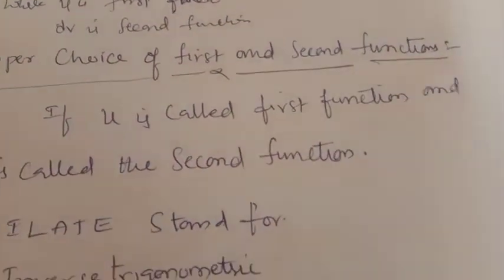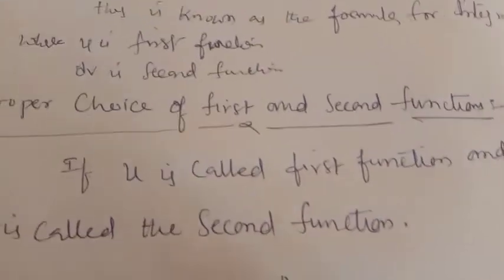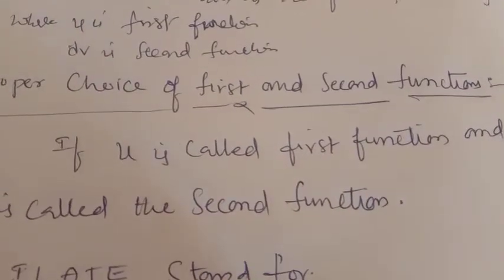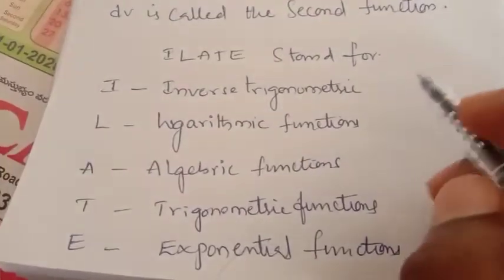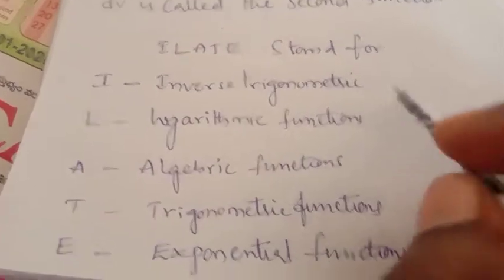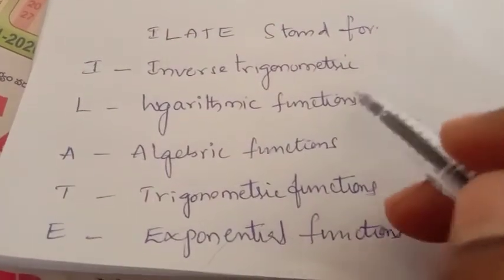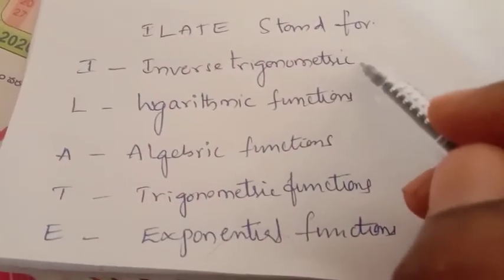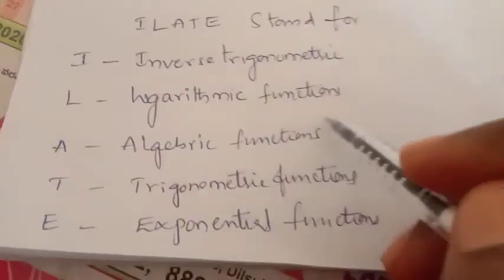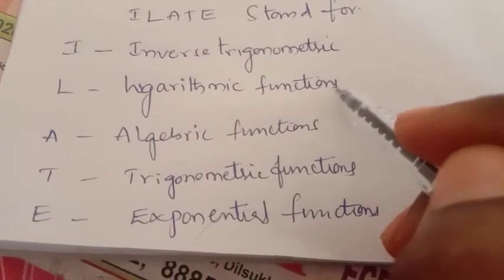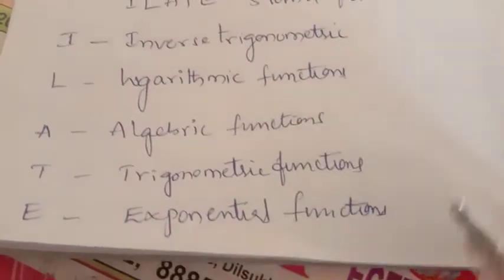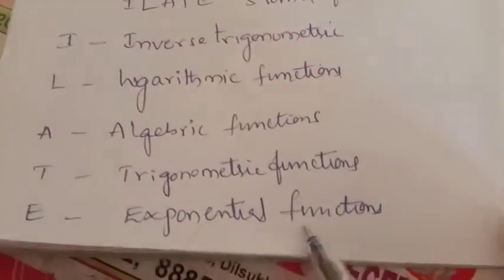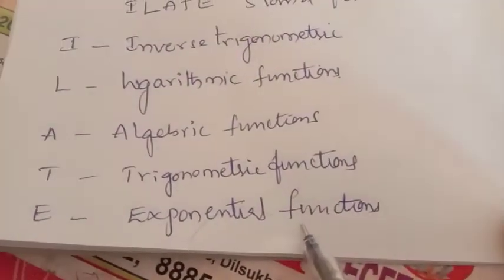Here we have a small rule called the ILATE rule. ILATE stands for: I for inverse trigonometric functions, L for logarithmic functions, A for algebraic functions, T for trigonometric functions, and E for exponential functions.